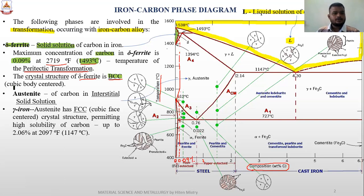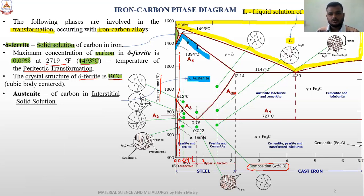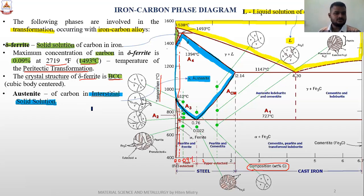Next, talking about the gamma austenitic structure, shown in the blue portion. The gamma austenitic structure is in the blue section - this triangular type of structure. This blue color is basically showing an austenitic structure, which has carbon in interstitial solid solution. As we have already studied solid solution, it is categorized as an interstitial solid solution. The austenite has a face-centered cubic structure, which permits high solubility of carbon up to 2.06% at 2097 degrees Fahrenheit.